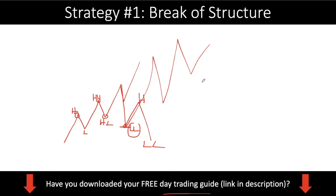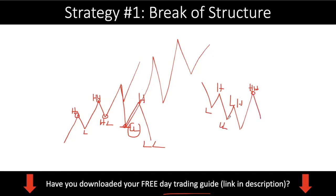Of course, the opposite is true for the downtrend. If you are in a downtrend with a low, a lower low, a high, and a lower high — and instead of making a lower low, price comes up and makes a higher high — then this is the first telltale sign that the market is about to reverse. If price comes back down, it could form an inverted head and shoulder or a potential double bottom. If price then goes back up and you have a higher high and higher low, then you are officially in an uptrend.